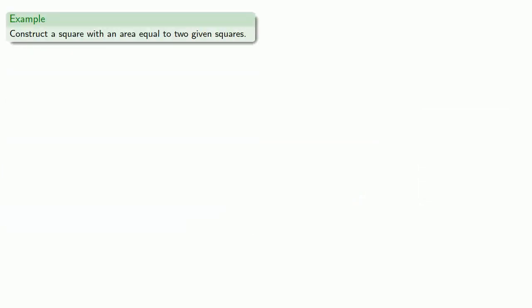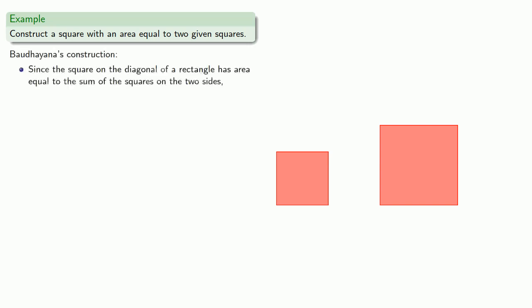Baudhāyana considers the problem of constructing a square with an area equal to two given squares. So, we have our two squares. Baudhāyana's construction: since the square on the diagonal of a rectangle has area equal to the sum of the squares on the two sides, juxtapose our two squares, and the diagonal will have the required length.